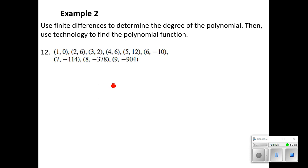In number 12, we're given a list of points instead of a table. It's helpful to put this in a table so that we can make sure our x values have an equal spacing, and then we can clearly see our y values in order to conduct our differences. So let's see our x values. We've got 1, 2, 3, 4, 5, 6, 7, 8, and 9. Then our y values, or our outputs, our f(x)'s, we've got 0, 6, 2, 6, 12, -10, -114, -378, and -904. I should have spaced out my x values a little bit more, but really, once we know that they're equally spaced, we don't need the x values anymore until we go to the calculator.